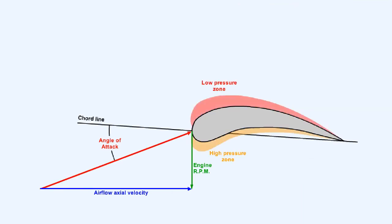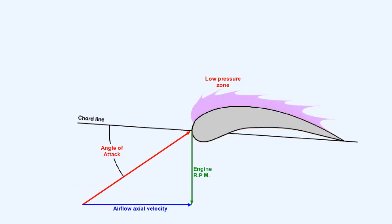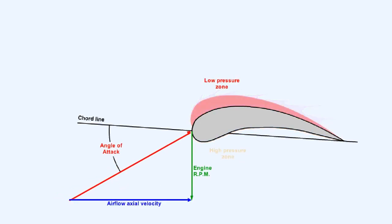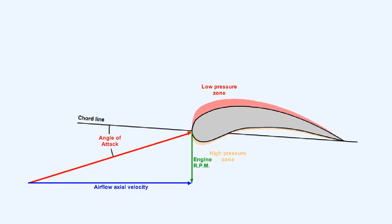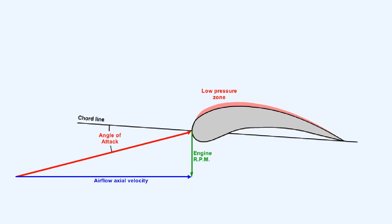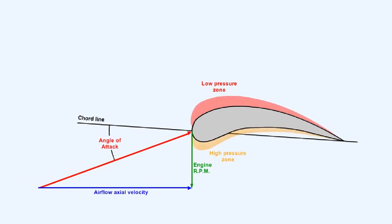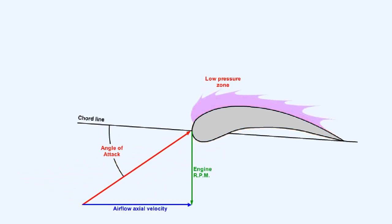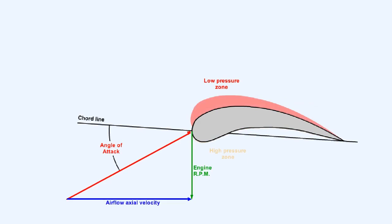Engine operation either above or below the engine design RPM parameters. Engine overspeed or underspeed will increase or decrease the rotational speed of the compressor blades — situations which may either increase or decrease the angle of attack to the point where the efficiency of the blade is destroyed and thus the axial velocity of the airflow is reduced.